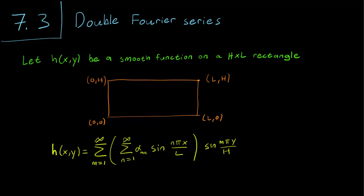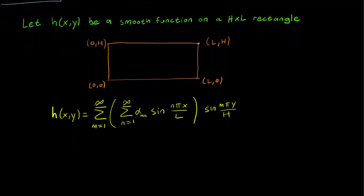Again, we know that we can express this h(x,y) in this form, but we have to figure out what the constant alpha_mn is. So let's talk about how to calculate the Fourier coefficients.